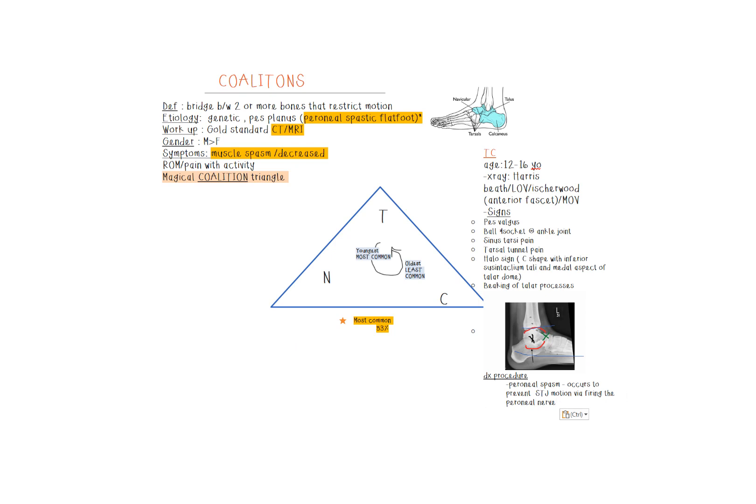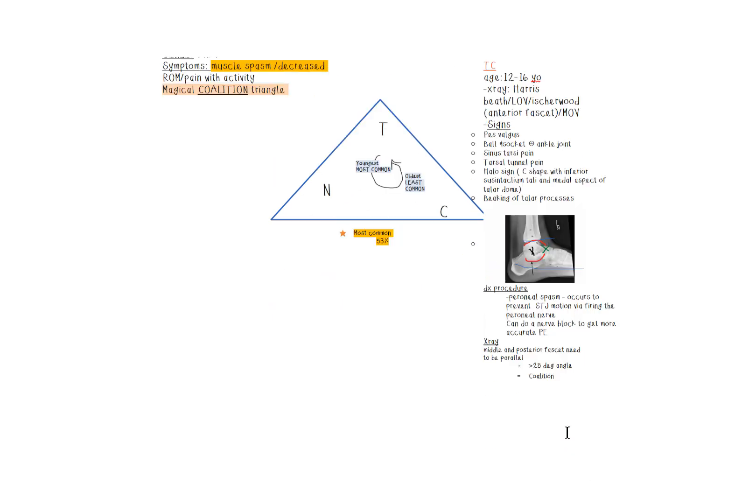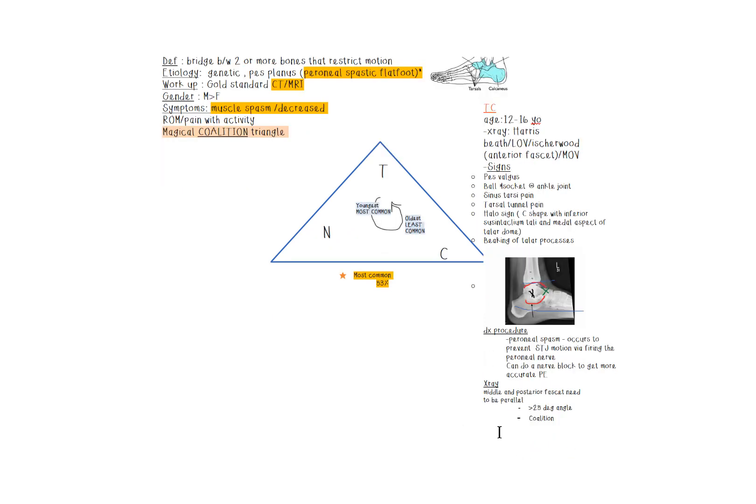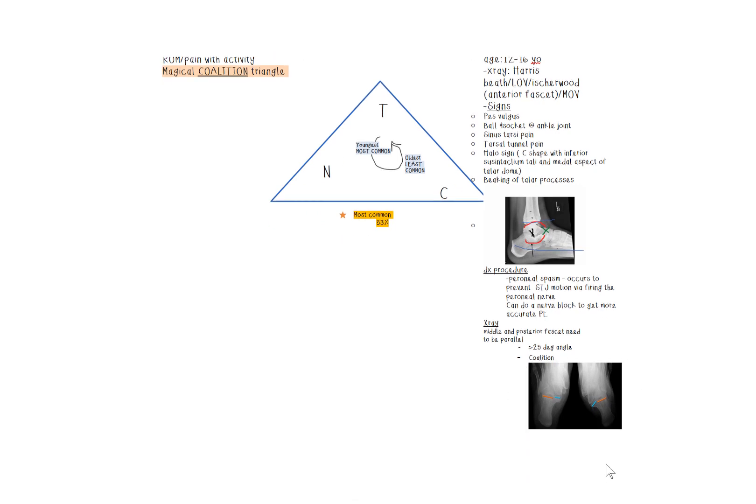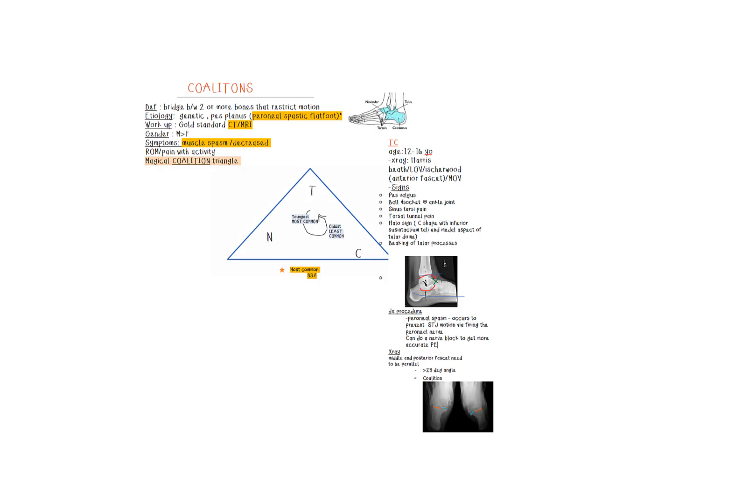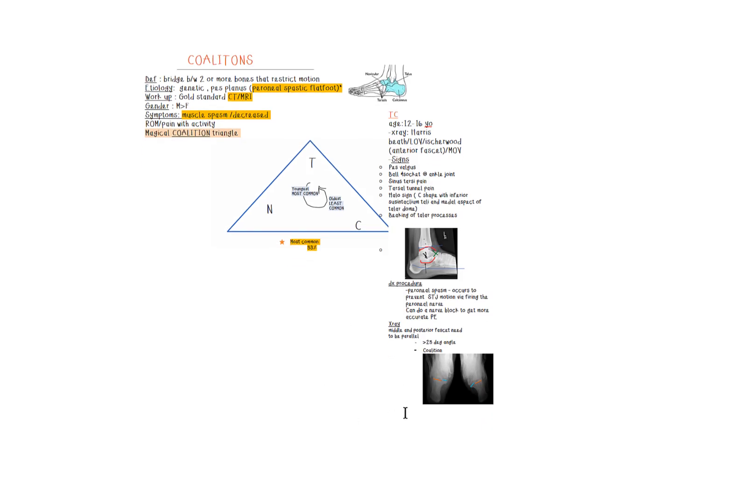Know this for the tests. We have the diagnostic procedures. The peroneal spasms usually occur, so if you do a peroneal nerve block you'll have a better way of assessing the subtalar joint and seeing if it can even move in range of motion. If it doesn't, you're suspecting coalition. X-rays are one way to look at the coalition. You want to look for the middle and the posterior facet. If you notice they're parallel like this picture, that means there's no coalition. But if there's greater than 25 degree angle to them like the picture on the right, definitely a coalition.